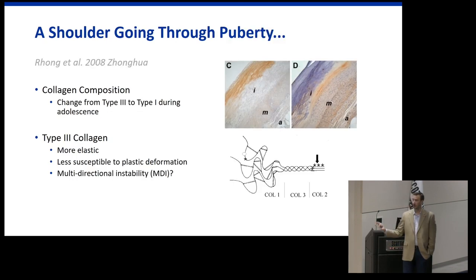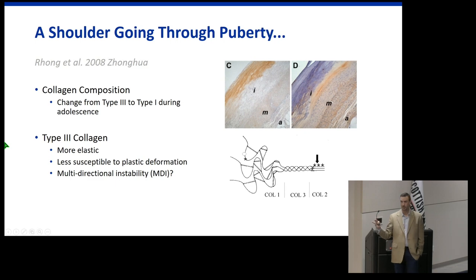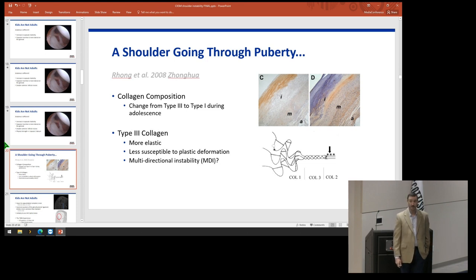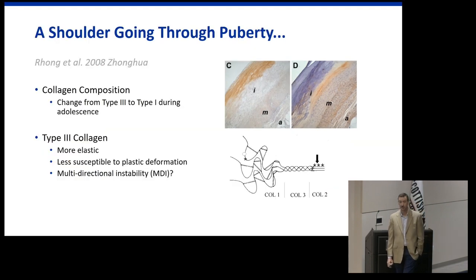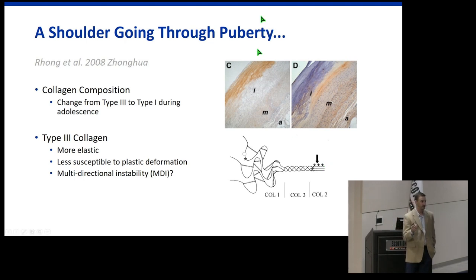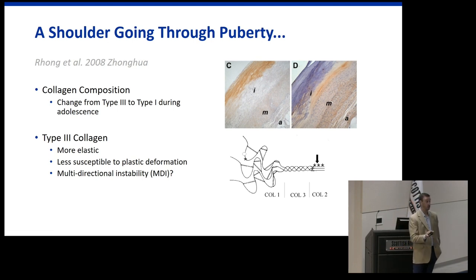There's a transition in collagen types as we go from adolescence through puberty and into adulthood — a change from type 3 collagen to type 1. Type 3 is that really stretchy, elastic collagen and is less susceptible to plastic deformation. This transition may contribute to patterns more in line with multidirectional instability pictures.